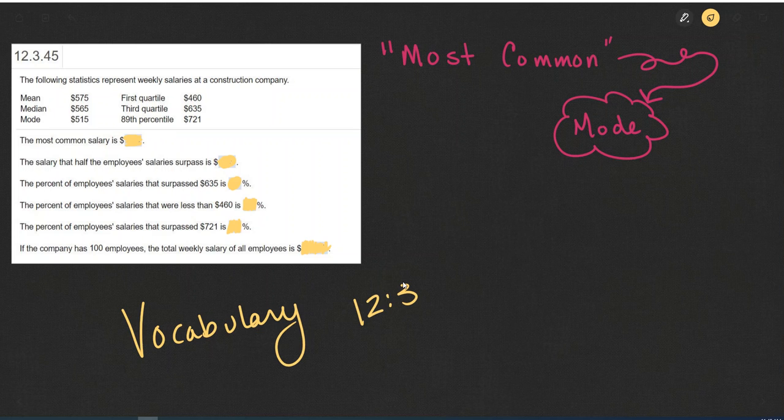So let's look at these examples. The first question asks, what is the most common salary? Most common is referring to the mode.